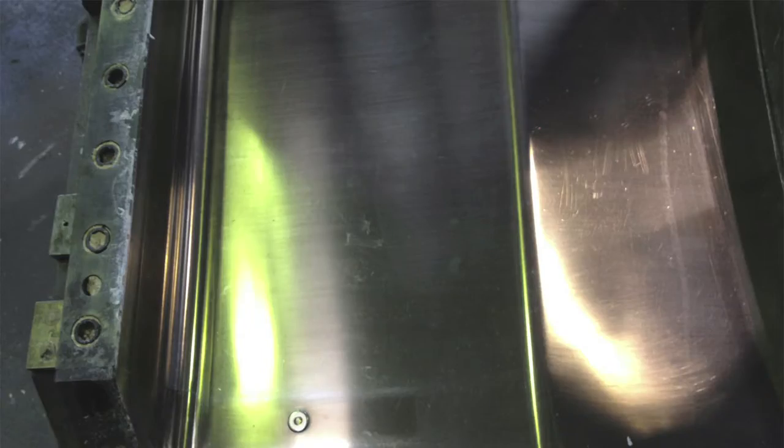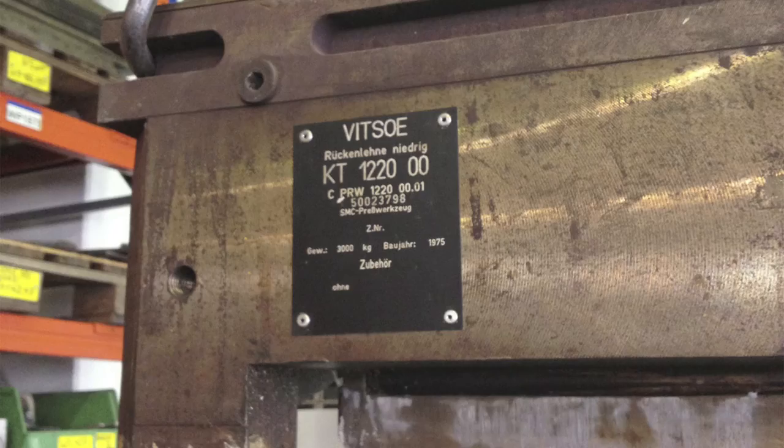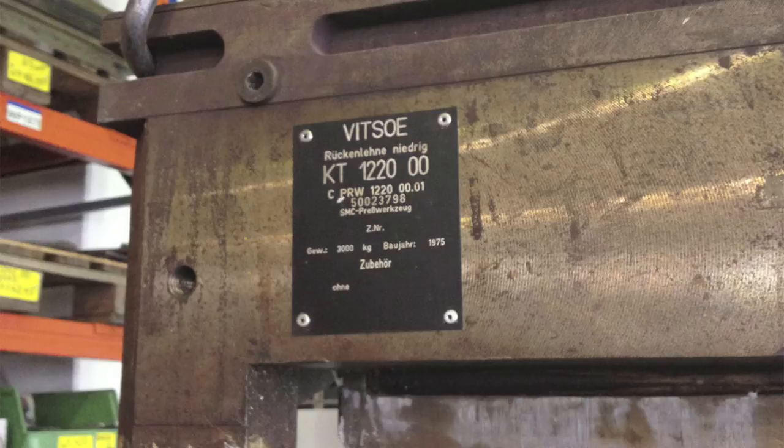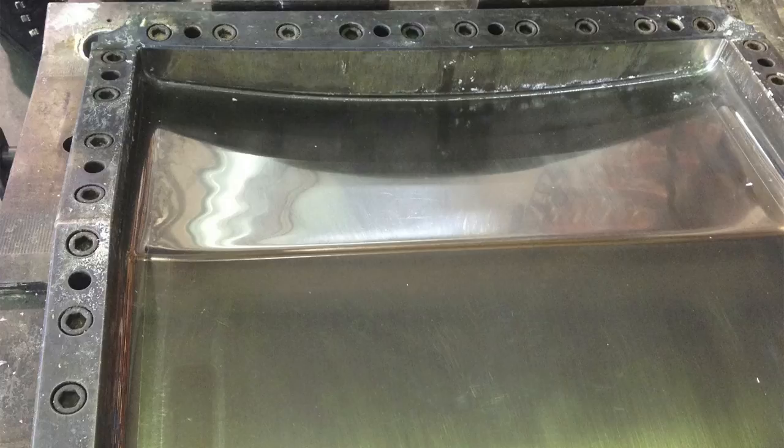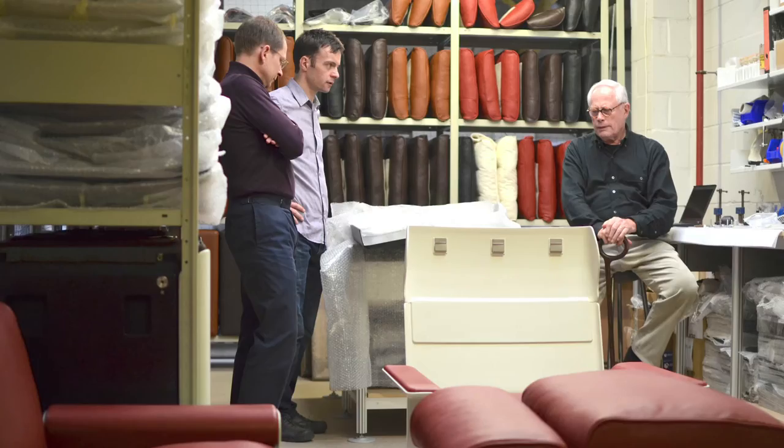The panels are made of sheet moulding compound. We're using tools from 1975. Enormous lumps of steel, beautifully machined. You basically lay the sheet moulding compound into the tool and then it's compressed and heated to form the part. They're then painted to achieve the finish that we want.